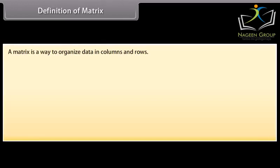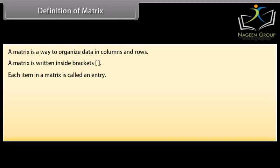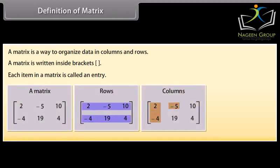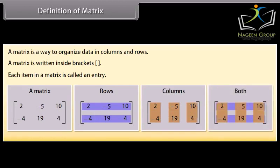Definition of matrix. A matrix is a way to organize data in columns and rows. A matrix is written inside brackets. Each item in a matrix is called an entry. Look at this matrix. It has two rows and three columns. The entries of the matrix below are 2, minus 5, 10, minus 4, 19, 4.